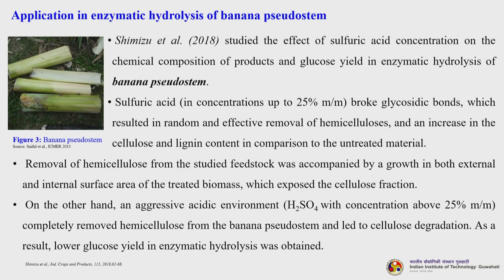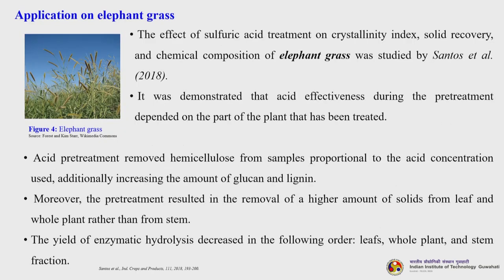For all such processes - dilute acid pretreatment, enzymatic hydrolysis, fermentation - you need to optimize process parameters to get proper yield. Another application on elephant grass: Santos et al. studied the effect of sulfuric acid treatment on crystallinity index, solid recovery and chemical composition. Acid effectiveness depended on the part of the plant treated. Acid pretreatment removed hemicellulose proportional to acid concentration, increasing glucan and lignin content. The yield of enzymatic hydrolysis decreased in the order: leaves, whole plant and stem fraction.